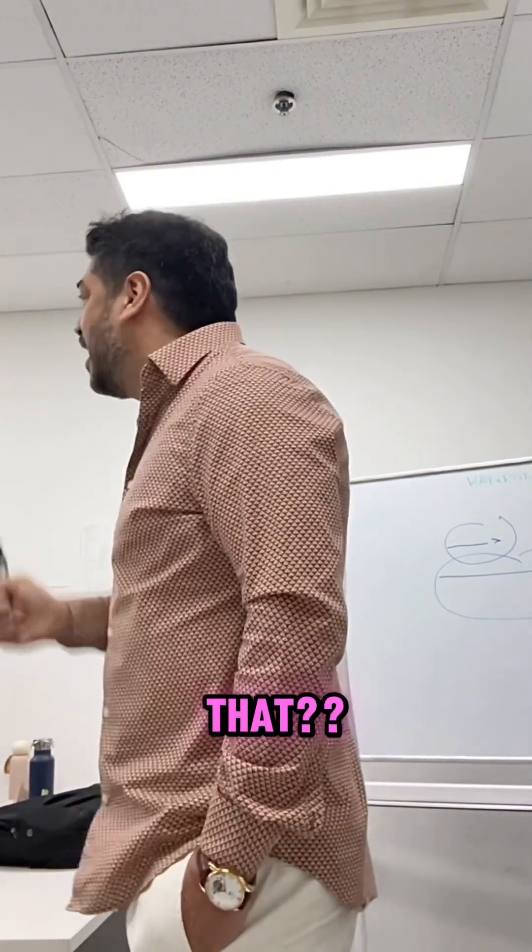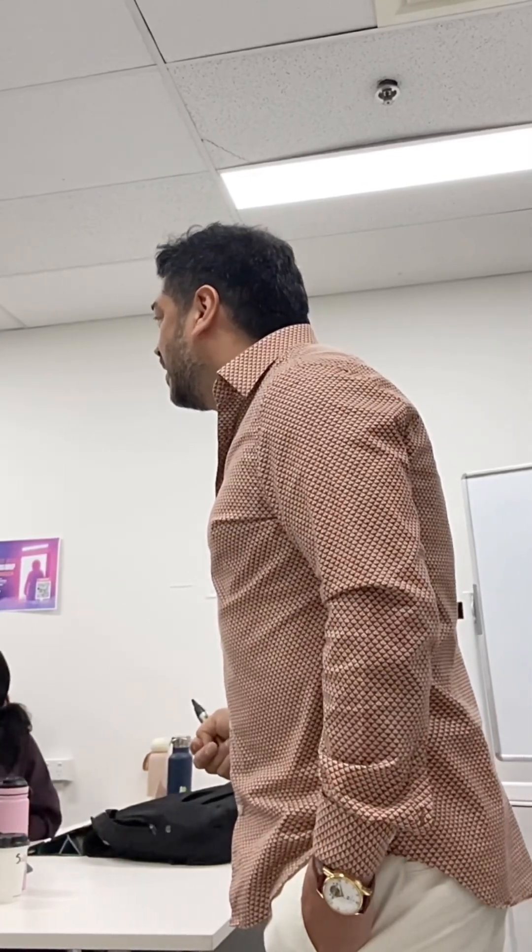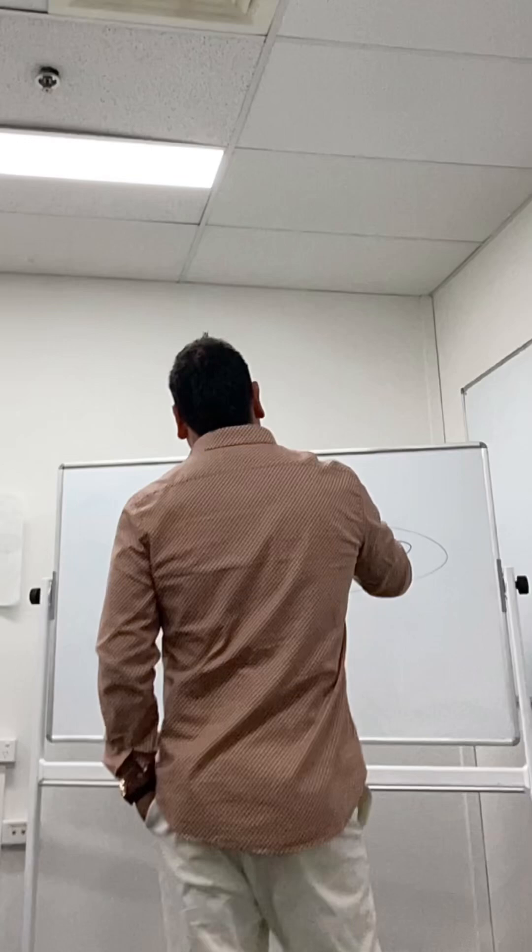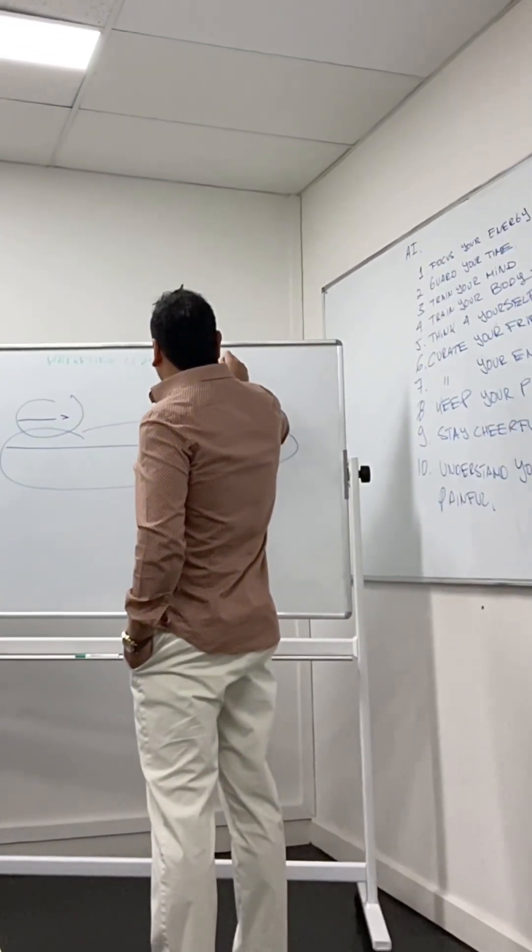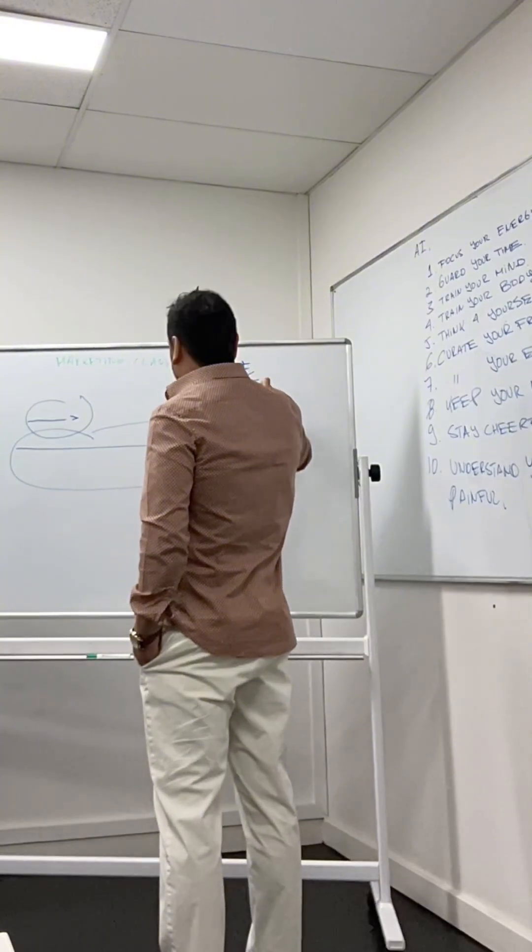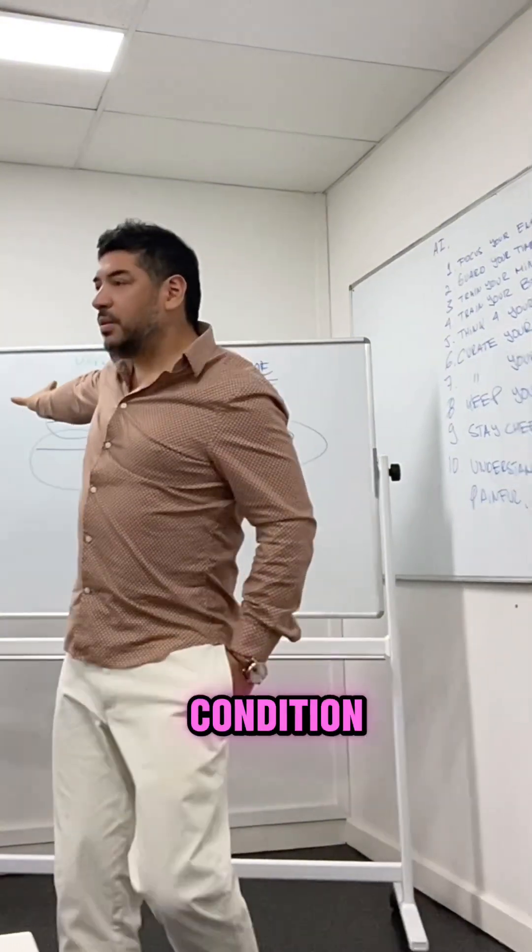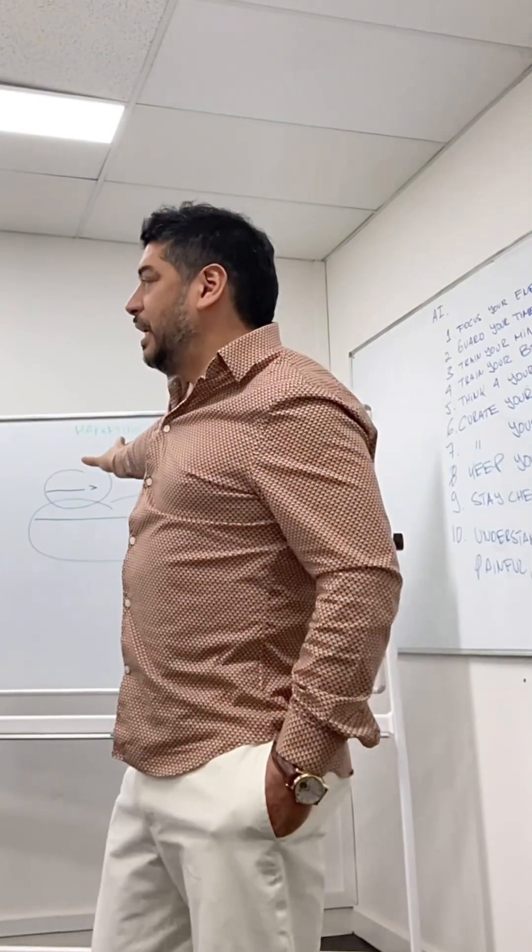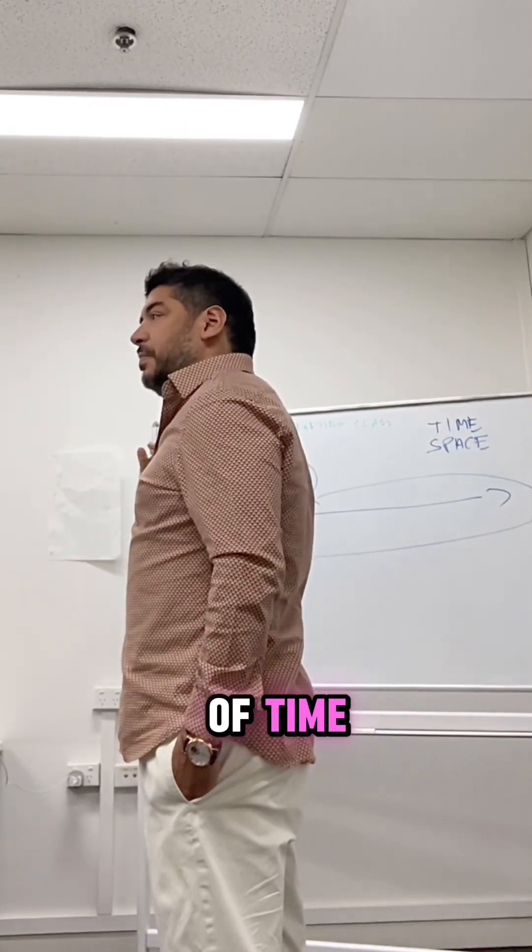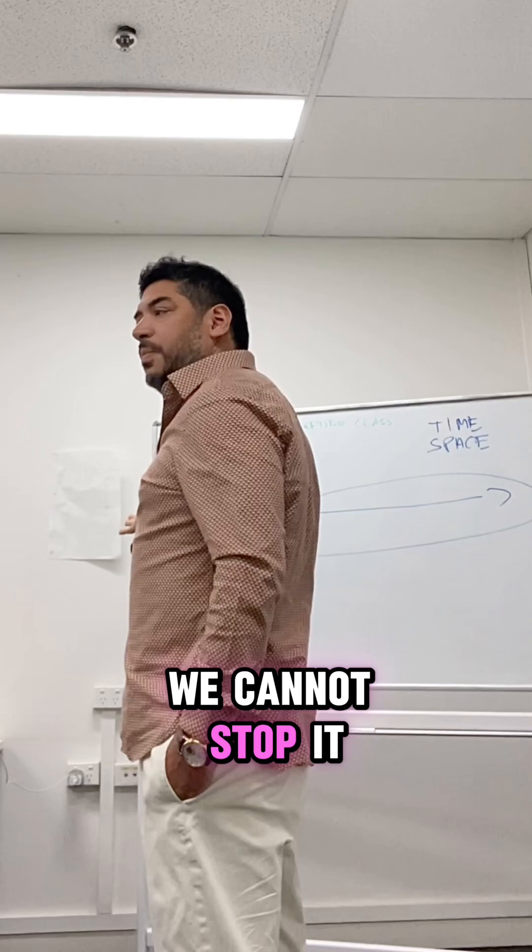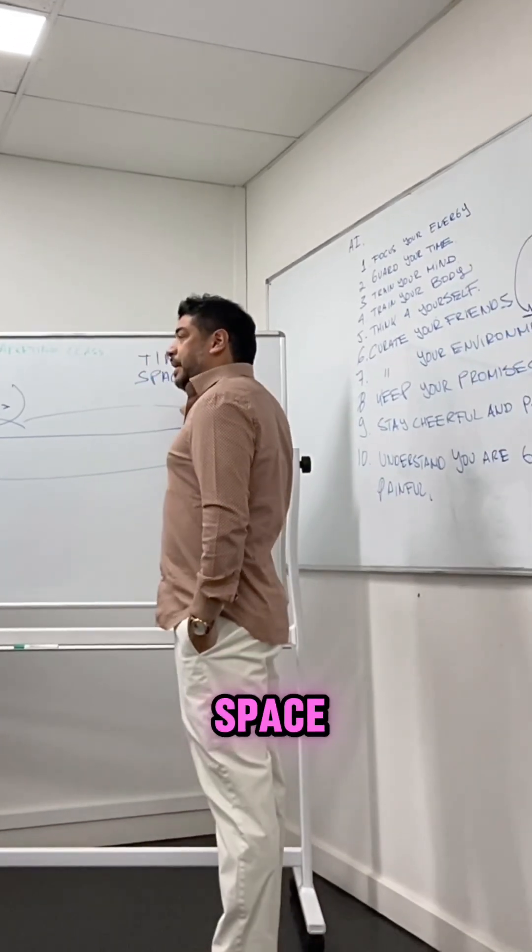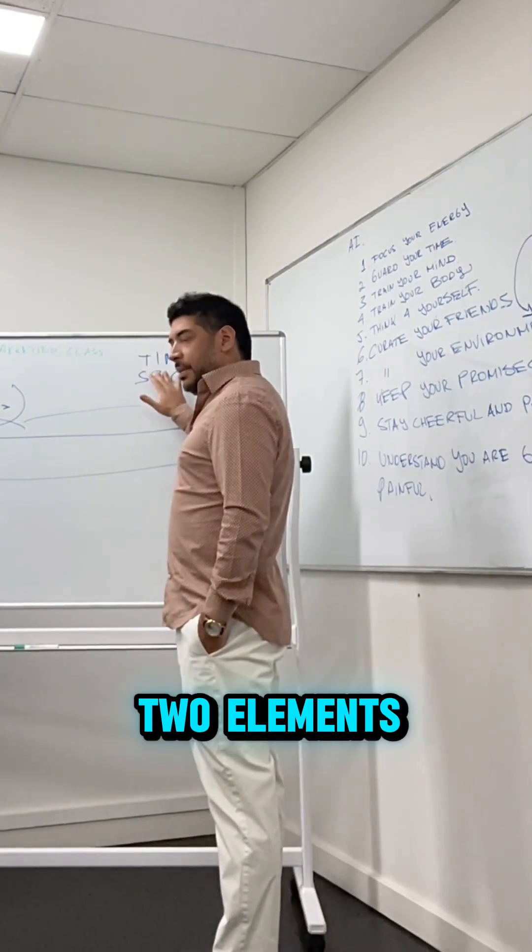That's it. Time and space - that is our human condition. There is nothing that we can do in terms of time. We cannot stop it, can we? So in terms of time and space, we are constrained by these two elements.